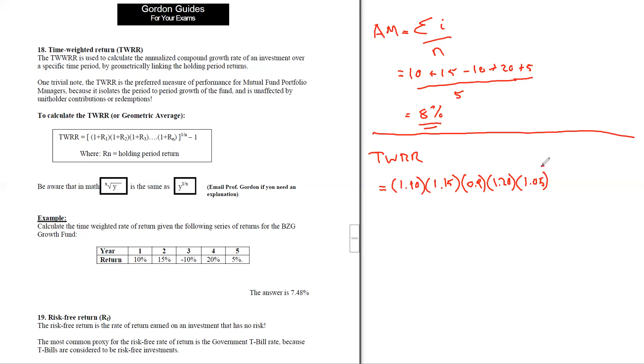Times 1 plus 20%, so that's 1.20, times 1 plus 5%, 1.05. Now all of this needs to be put to the exponent 1 over 5 because we have five periods. Then we'll subtract off one and we will multiply by 100 to get this into percent.